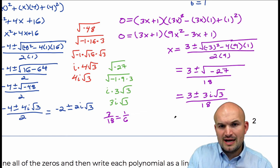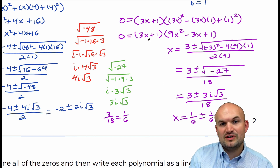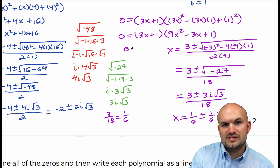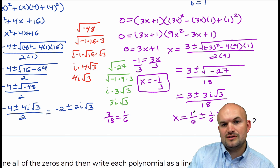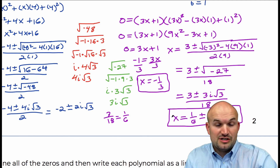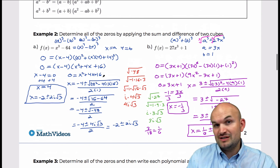So we have two complex solutions: x equals 1/6 plus or minus (1/6)i√3. Now let's not forget the binomial factor. Setting 3x plus 1 equal to 0: negative 1 equals 3x, divide by 3, so x equals negative 1/3. So again we have 3 zeros: 1 real zero (x = -1/3) and the plus or minus gives 2 complex zeros — satisfying the fundamental theorem of algebra.